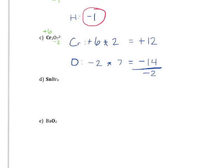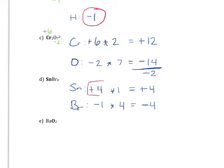So the next one we've got tin and bromine. Since bromine is a halogen, we can be pretty confident that its oxidation state is minus one. There are four bromine atoms, so we're looking at a total oxidation state of minus four there. Since there's no charge, that tells us that the positive oxidation state needs to be positive four. Since there's only one tin, that means that tin needs to have an oxidation state of plus four.